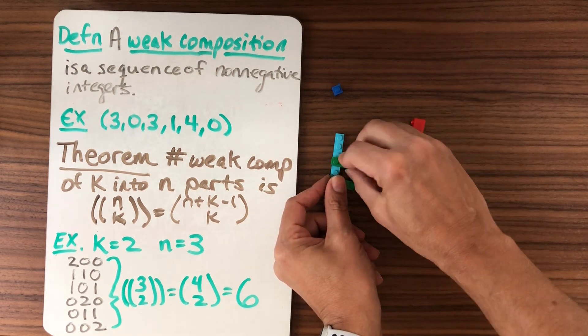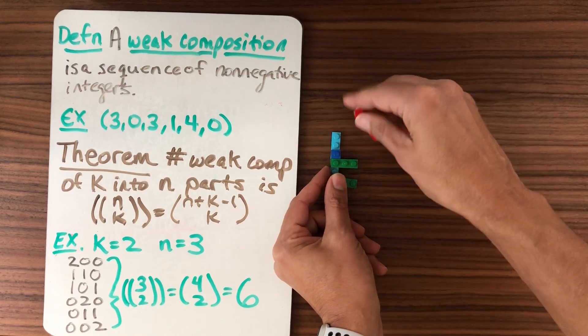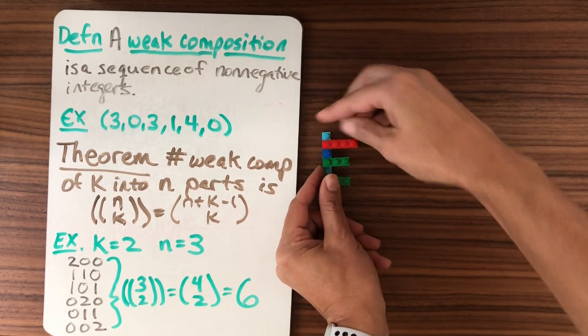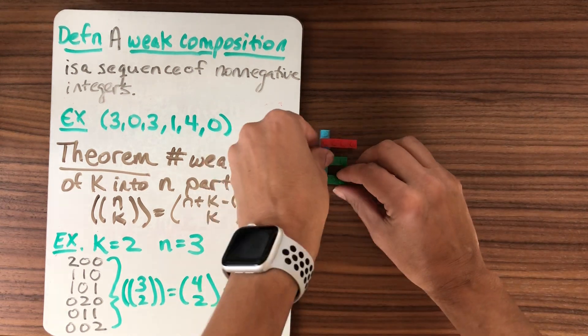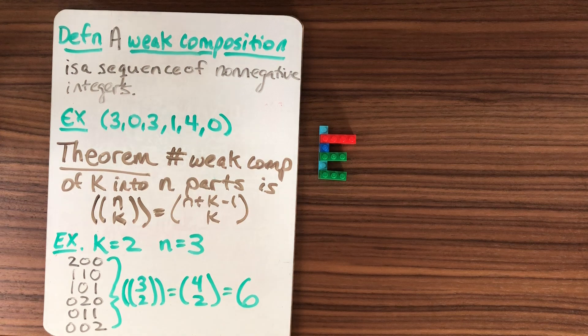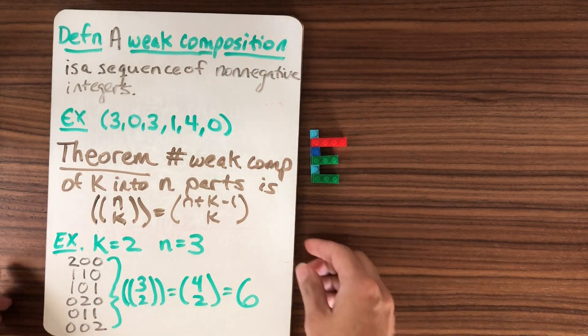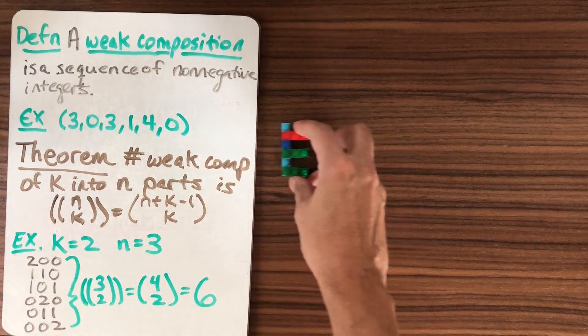So I'll have a part of size three, and then zero, so don't put anything there. And then another part of size three, a part of size one, a part of size four, and then another part of size zero. So this is one way that I could visually represent this weak composition. It turns out that representing compositions and the other types of sequences that we're going to study is going to be incredibly helpful.